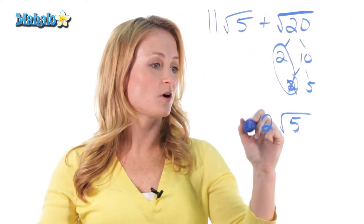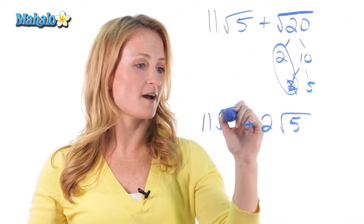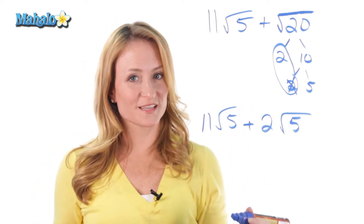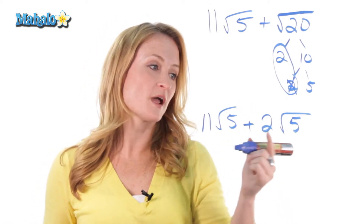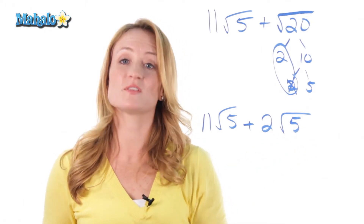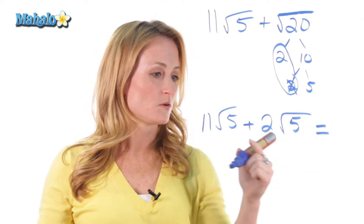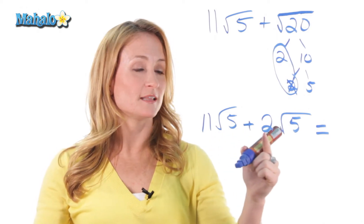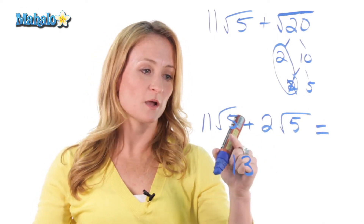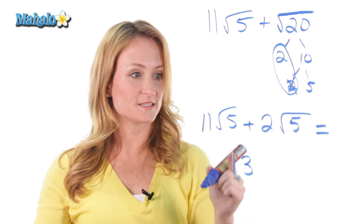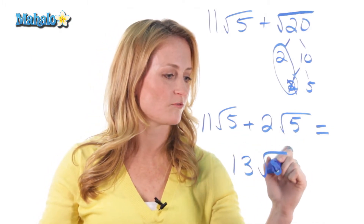Bring down our other eleven root five, and now it looks like a problem that we can do. Very simple — the radicals have the exact same number in them, so that means we can add them together. So add eleven plus two, that's thirteen. And we don't add the number inside the radical once it's the same — it stays. So it's thirteen root five.